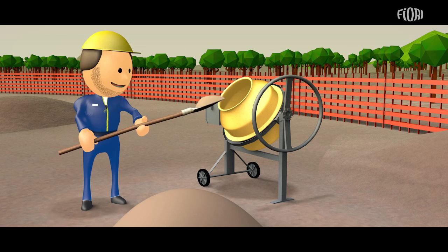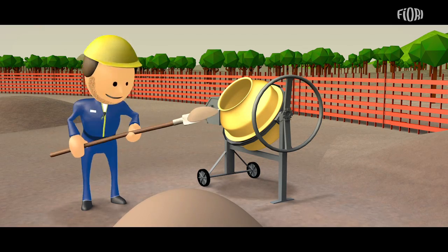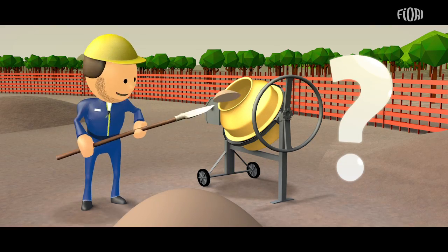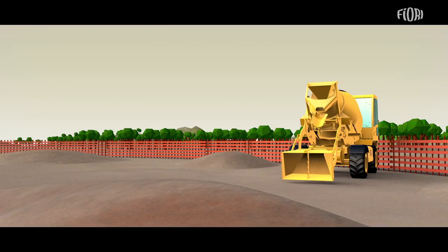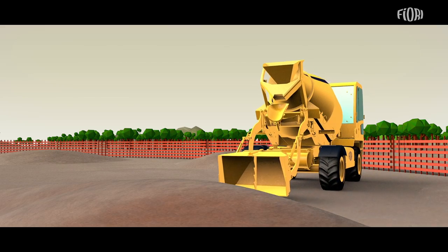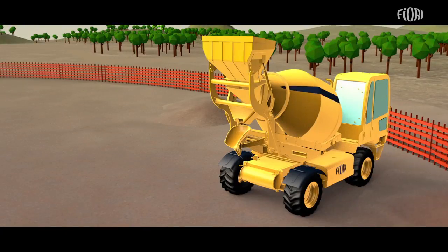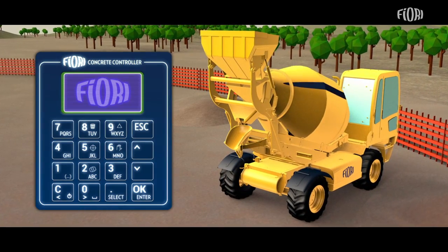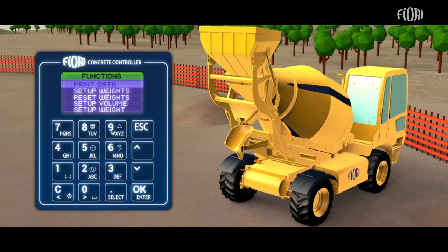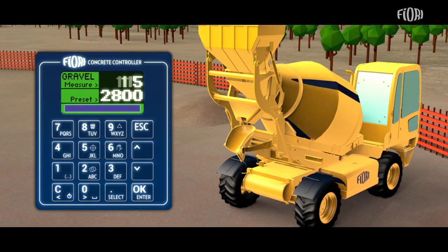Quality. When you rely on a manual concrete mixer, the component proportions are always approximate, making it impossible to certify the quality of the concrete. The Fiori concrete batching vehicle is the first concrete production plant on wheels in the world and makes it possible to eliminate human error. Thanks to Fiori batch control, it is possible to produce concrete of a certifiable quality.